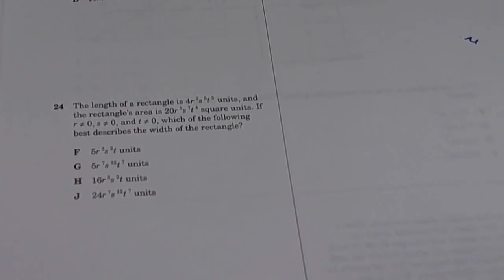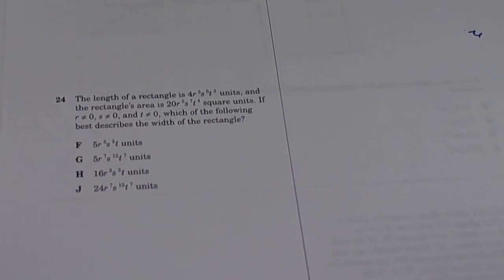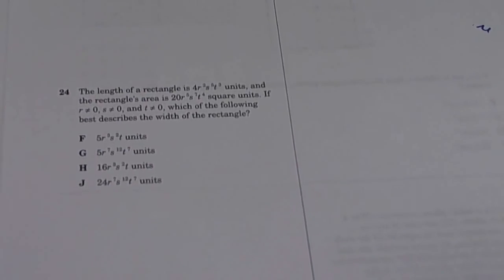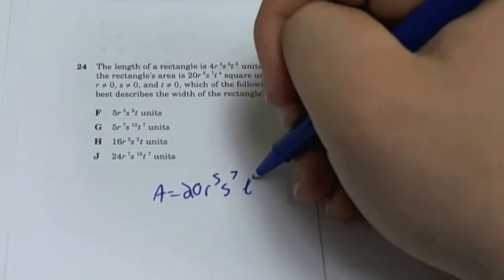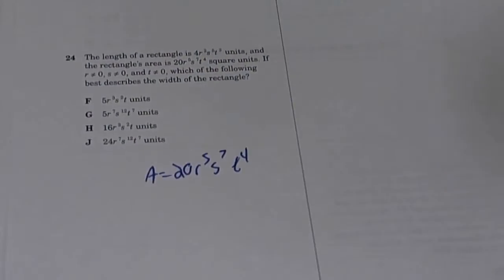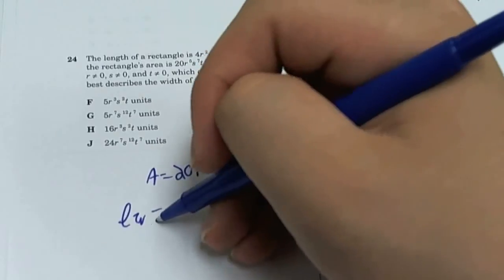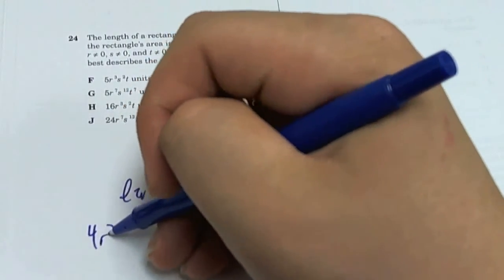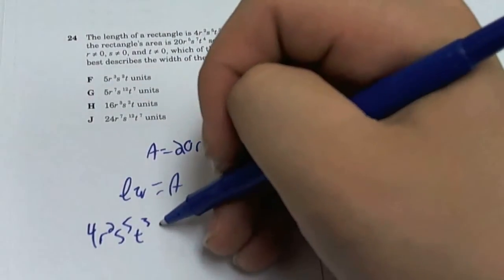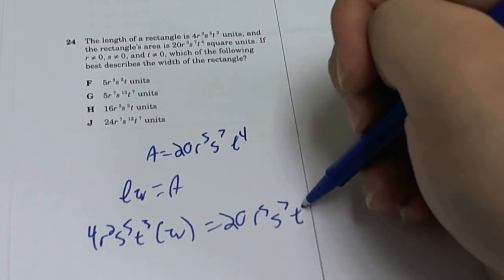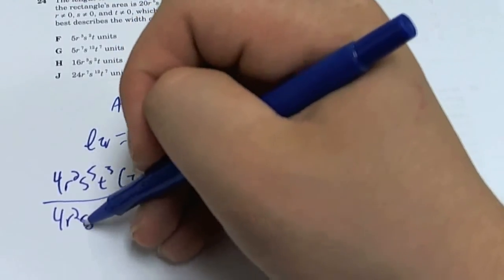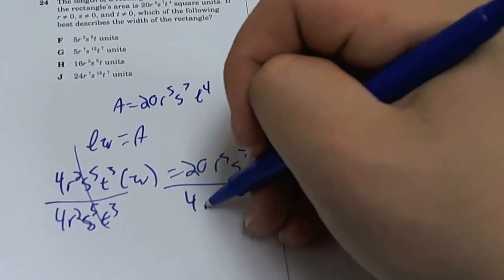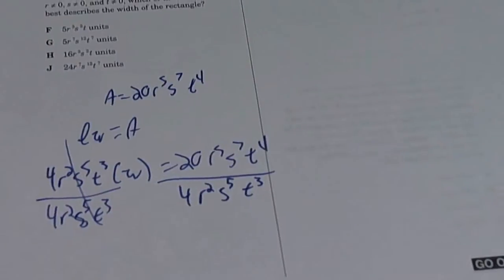For 24, the length of the rectangle is 4R squared S to the fifth T cubed units. And the rectangle area is that. If R, S, and T cannot be zero, which is the following best describes the width of the rectangle? So we know the area is equal to 20R to the fifth S to the seventh T to the fourth. And our area is length times width. So length times width has to equal our area, which is this. So our length is 4R squared S to the fifth T cubed times W has to equal 20R to the fifth S7 T to the fourth. So what do you do here? You divide, because you're trying to solve for the width. So divide by all that by 4R squared S to the fifth T cubed.